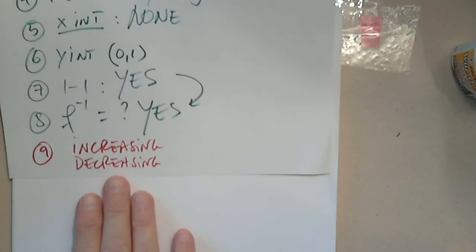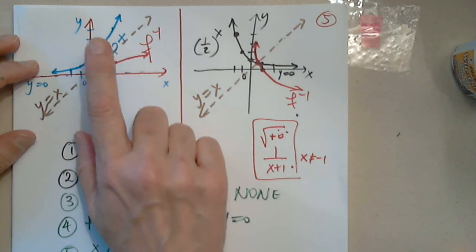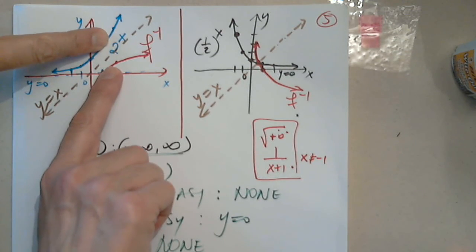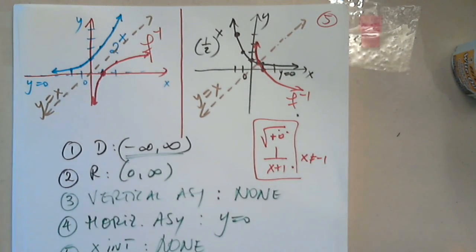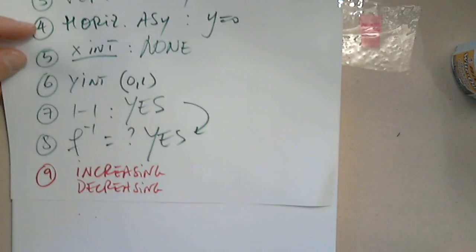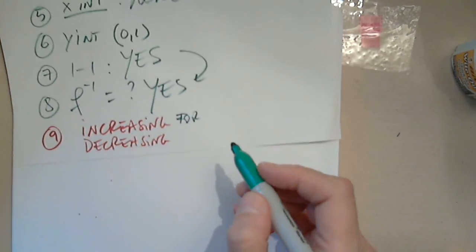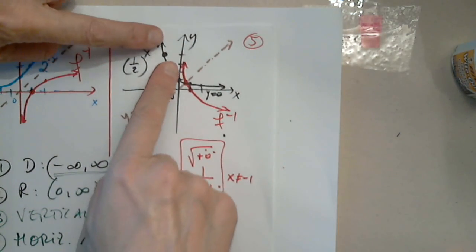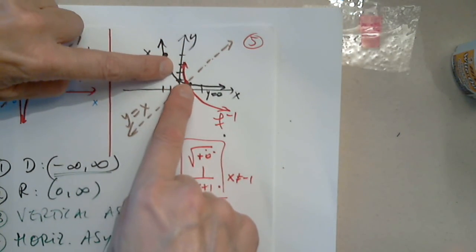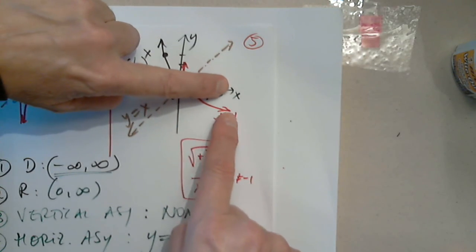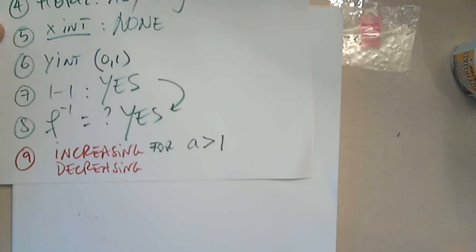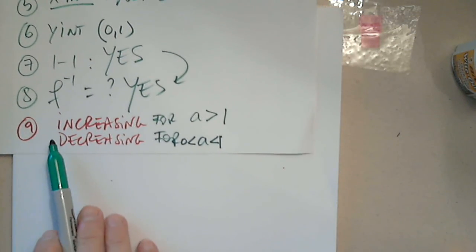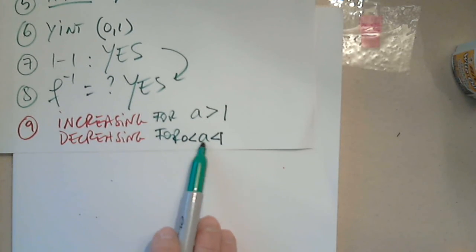Let's draw a conclusion about increasing and decreasing. When the base of the exponential function is greater than 1, both the function and its inverse are increasing all the time. When the base is between 0 and 1, both the function and its inverse are decreasing all the time.